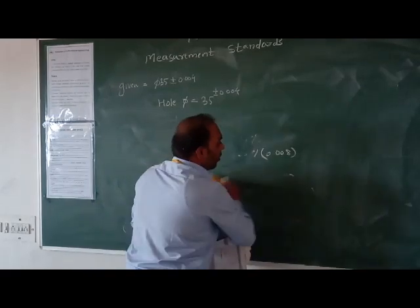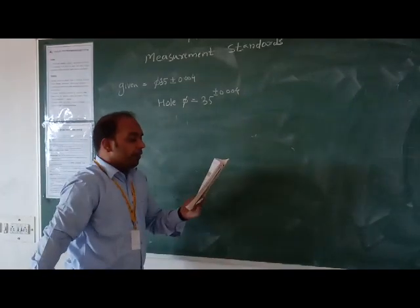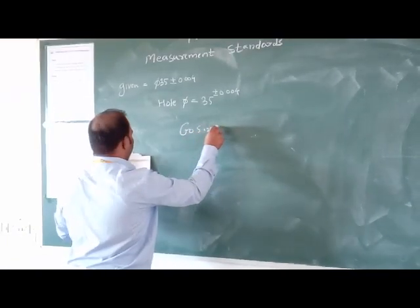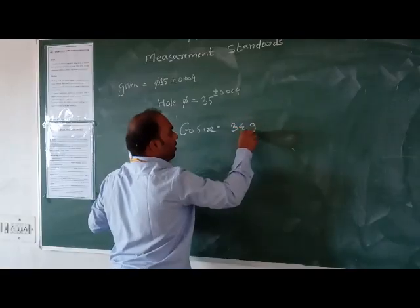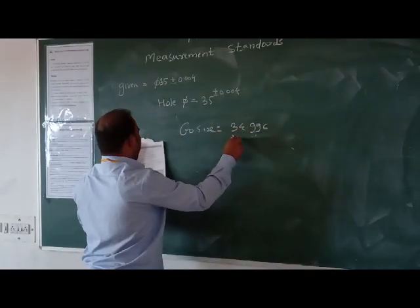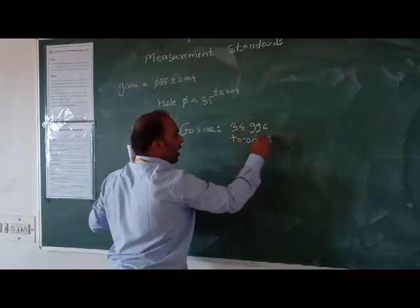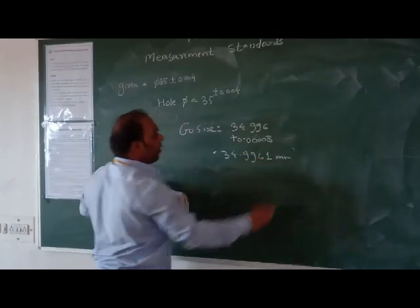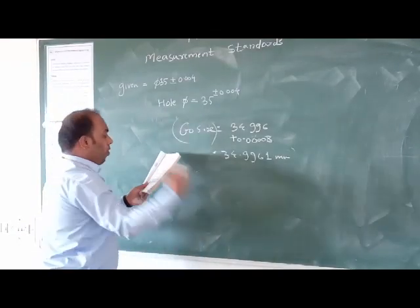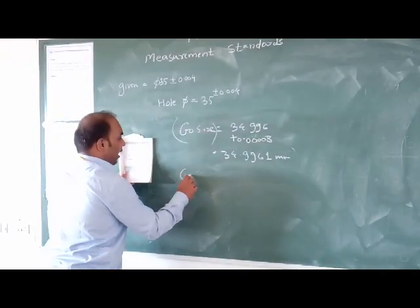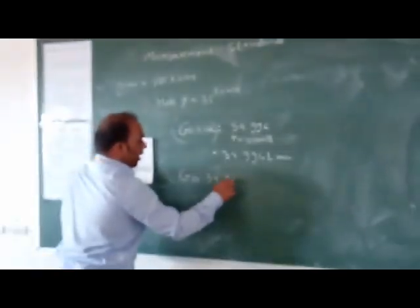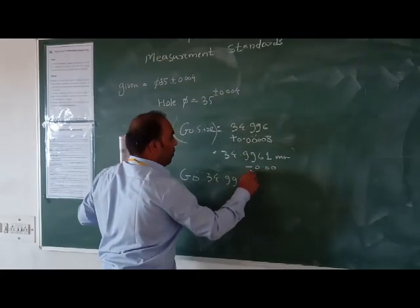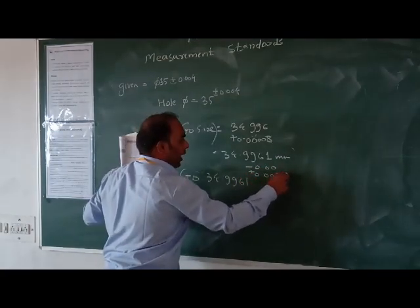Now we can calculate the gauge dimensions. The go gauge size will be 34.996 plus gauge maker tolerance 0.0008, giving us 34.9968mm. We can write this as go gauge: 34.9961 with tolerance range.